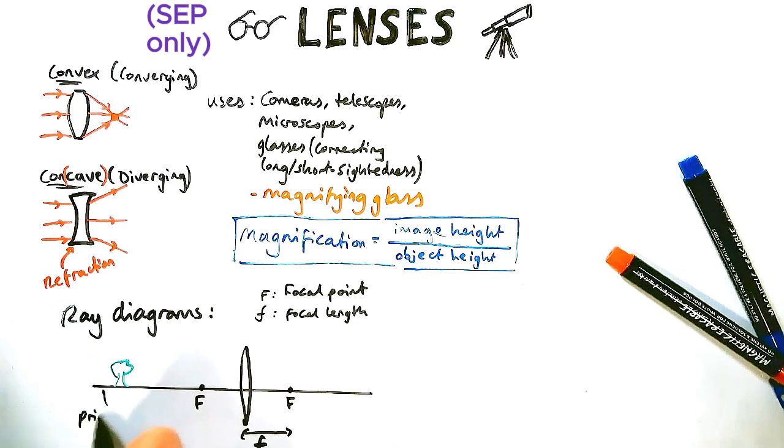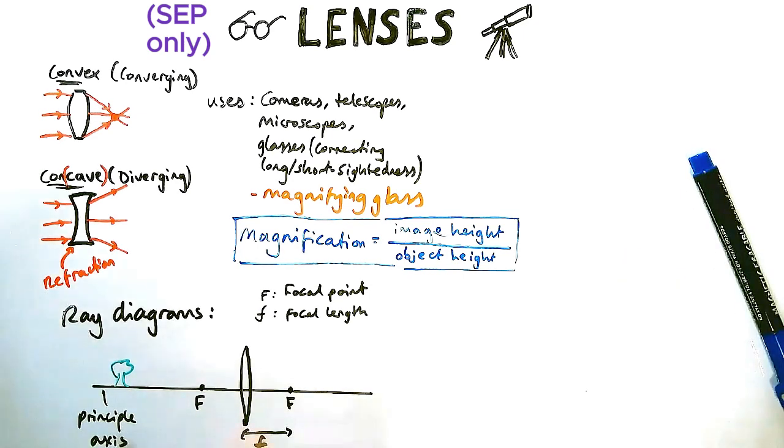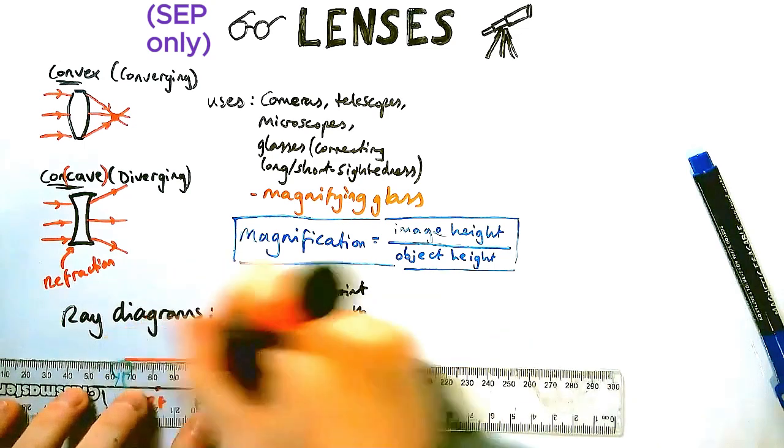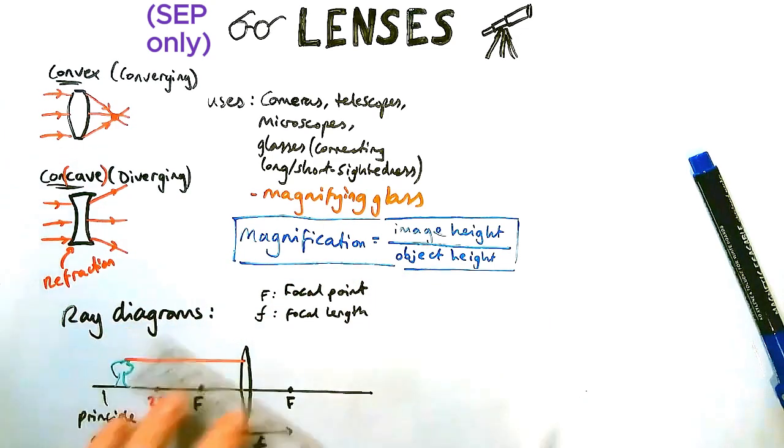The distance between the lens and the focus. And this big axis I drew earlier is called the principal axis, i.e. it's very important. So you might find also labelled we have 2F which is just 2 times the focal point.